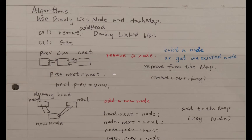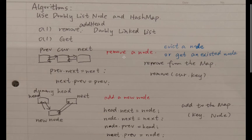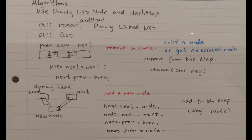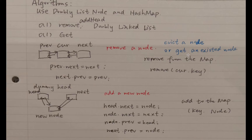Let's think about the operations. One is to remove a node — when we try to add a new node but the capacity is reached, we remove the least recently used node. Another operation is getting an existing node: when we get a node, we need to move it to the head of the queue. So we first remove the node, then add a new node at the head.